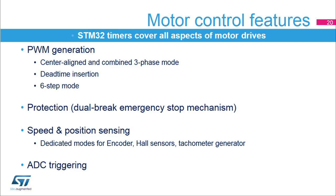This slide summarizes the timer's four main electrical motor control features. The timer includes specific PWM modes for controlling power switches. In addition to center-aligned and combined three-phase PWMs, the timer features dead-time insertion for complementary PWM generation and six-step mode for driving brushless DC motors. It includes power stage protection with a dual-level emergency stop mechanism to disable the PWM outputs by hardware in case of a fault. It is able to handle the most common sensors found in motor control systems. Quadrature encoders and hall sensors are used for position feedback, while tachometer generators are used for speed feedback. The timer also includes synchronized ADC triggering options necessary to properly manage voltage and current sensing.